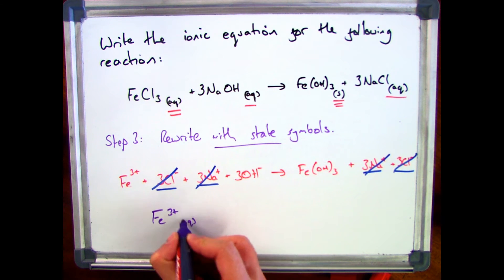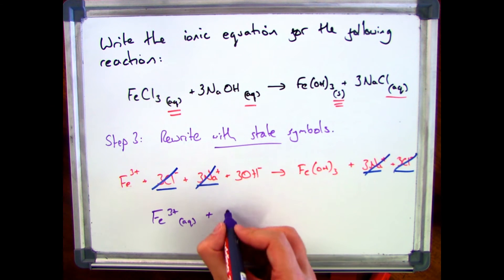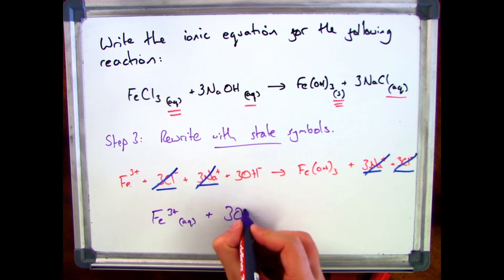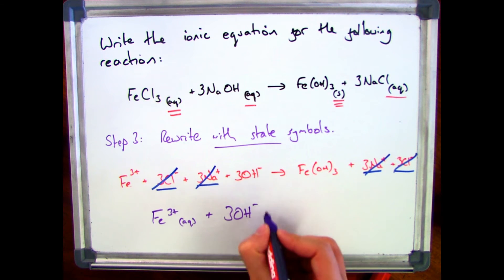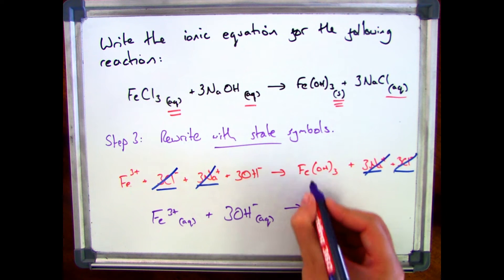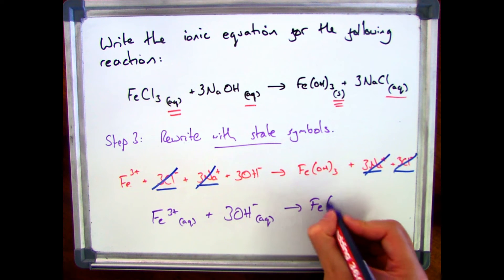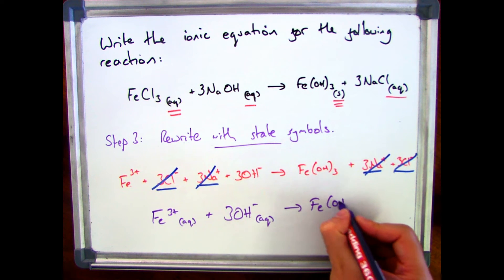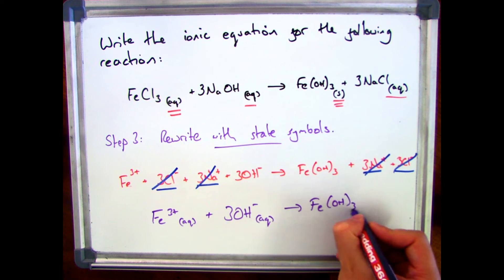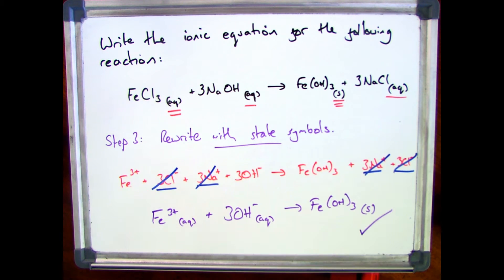All that's left is to rewrite with your state symbols, removing anything crossed out. So I've got Fe³⁺ (aq) reacting with 3 OH⁻ (aq), and that makes Fe(OH)₃ — which was my precipitate — therefore it's solid. And that is the completed ionic equation.